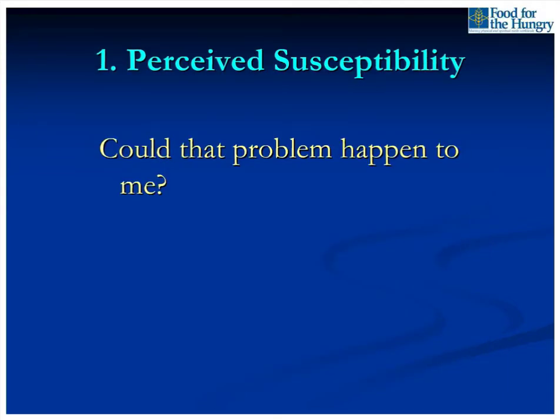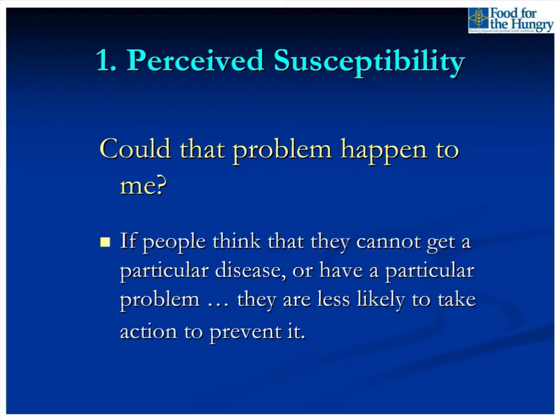The first determinant is perceived susceptibility: could that problem happen to me? If people think they cannot get a particular disease — or their crops couldn't get a particular problem — they're less likely to take action to prevent it, because they feel they have no vulnerability to it. Next is perceived severity: is the problem very serious? If people do not think that a problem or disease is serious or annoying, they're a lot less likely to take any sort of action to prevent it.